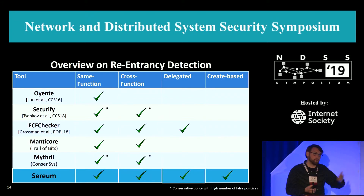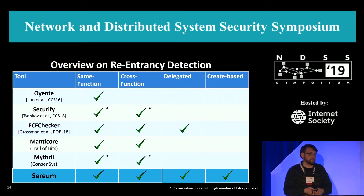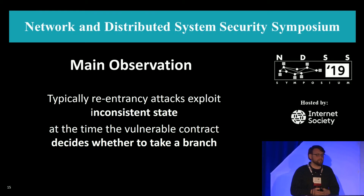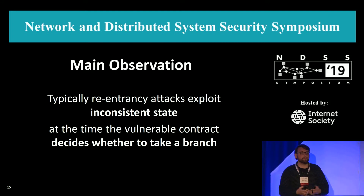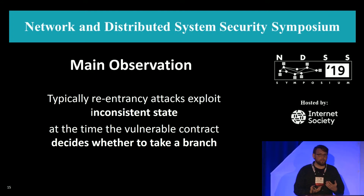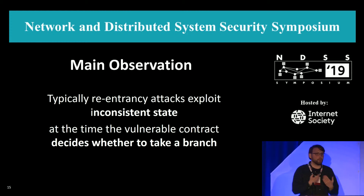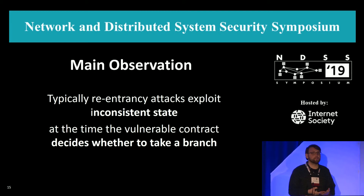So we designed Serium, and we developed it such that it detects all of those types of re-entrancy attacks. The main observation we had is that typically a re-entrancy attack exploits some inconsistent state at the time when the vulnerable contract decides whether to take a branch. As an attacker, you want to subvert some business logic — spend more ether than you invested, or vote more than once. On the smart contract level, this is always some branch which decides whether you are allowed to or not.